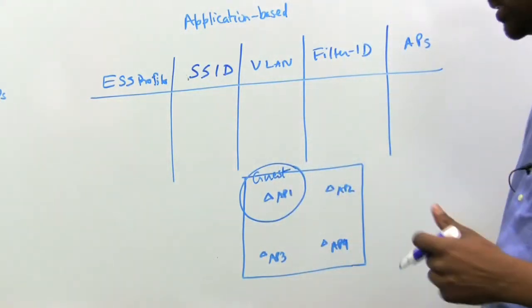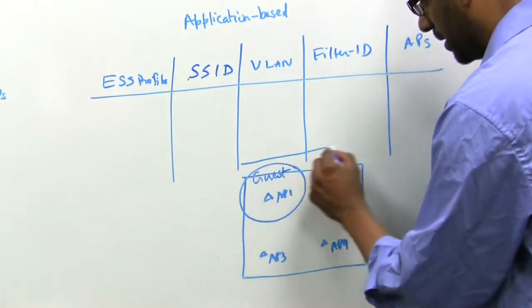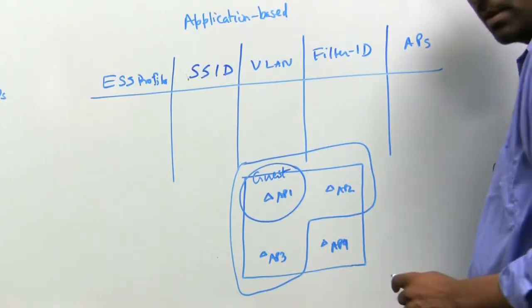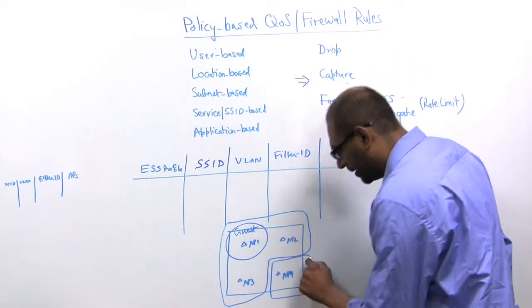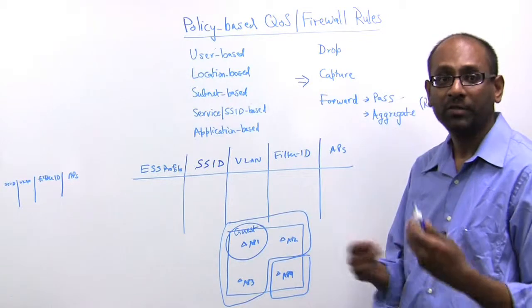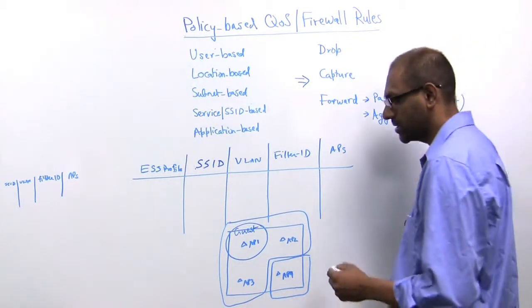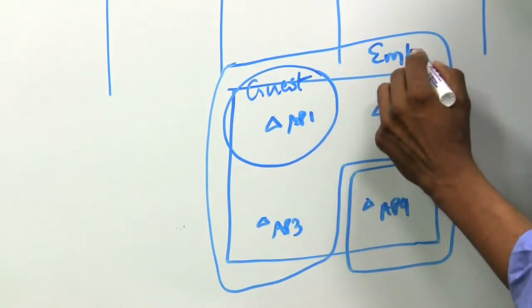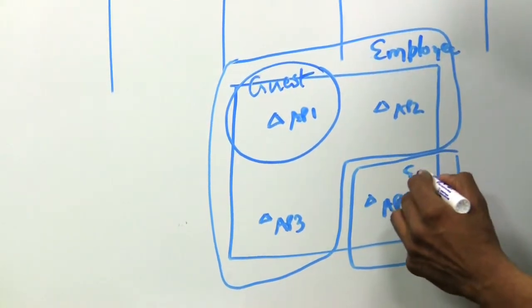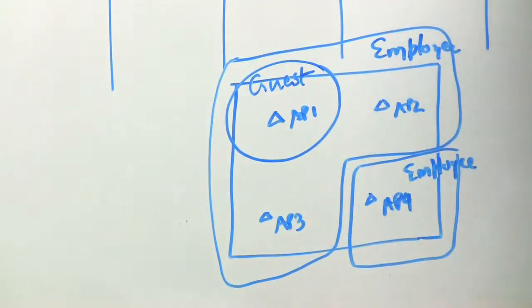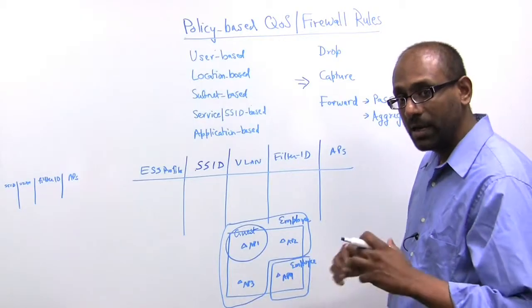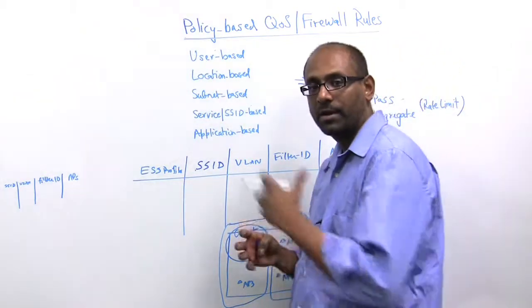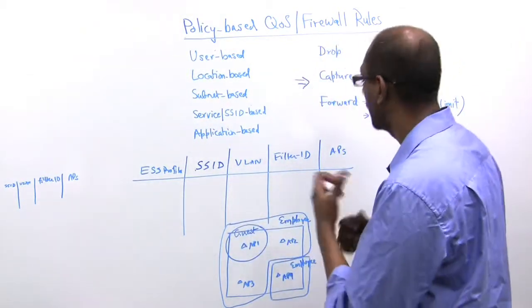And as for employees, that service is available in all of the access points, except that in certain locations, you might want to ascribe different security or quality of service policies. And we'll talk about the different usage cases once we sort of go over the technology. So you might have a guest SSID and an employee SSID. Notice that it's the same employee SSID that is advertised whether you're in this location or this location. It's just that you get mapped to different service profiles or you get mapped to different back-end quality of service and firewall profiles.